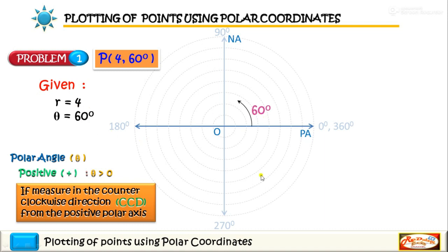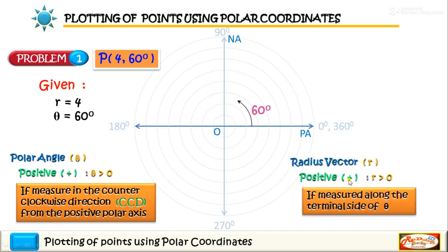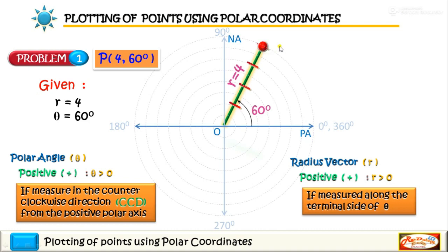Since r equals 4 and it is positive and greater than 0, we will measure r equal to 4 along the terminal side of the angle. From the pole, we will draw the line. Since r equals 4, we will lay off 4 units distance on this line — the first unit, the second unit, the third unit, and the last unit. So this is r equal to 4, and we have this point with coordinates (4, 60°).